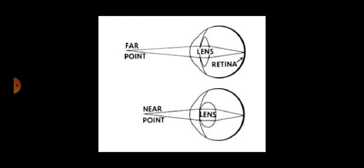This accommodation of the lens helps to refract the light and focus on the retina to form the image on the retina. The lens changes its shape by relaxation and contraction of the ciliary muscle.